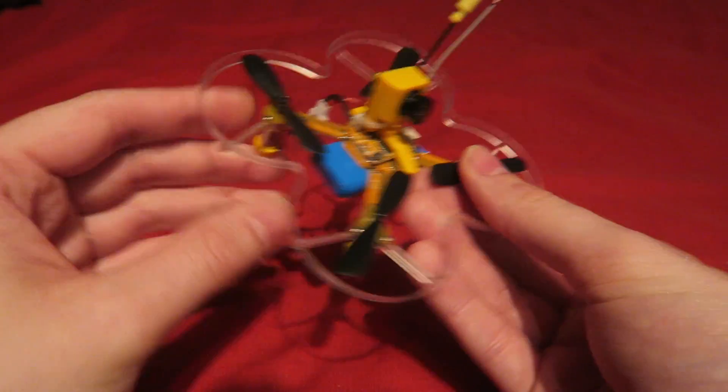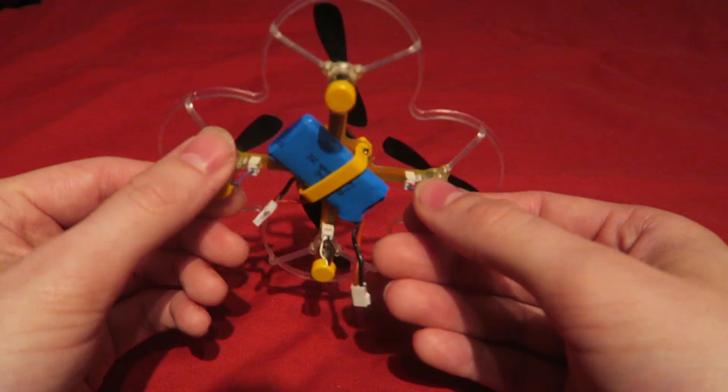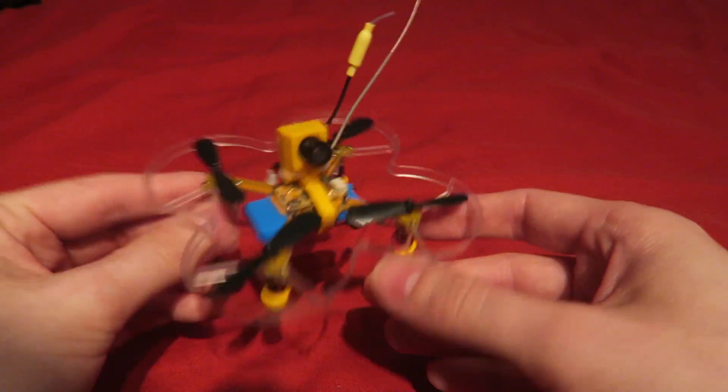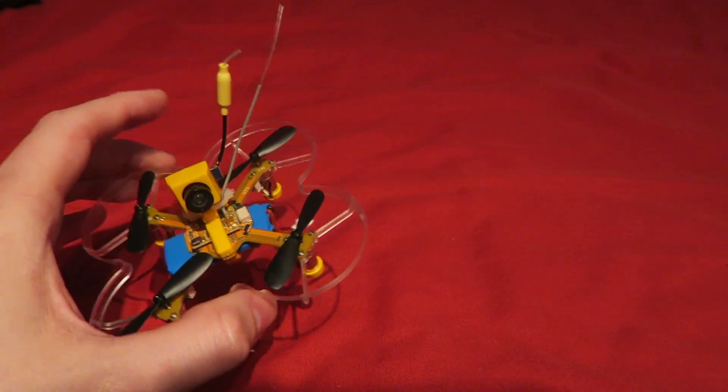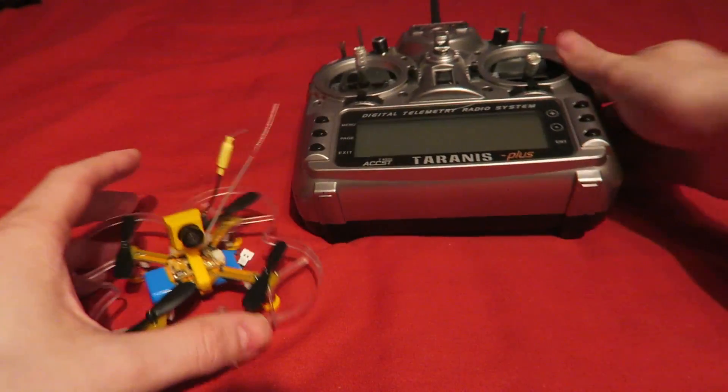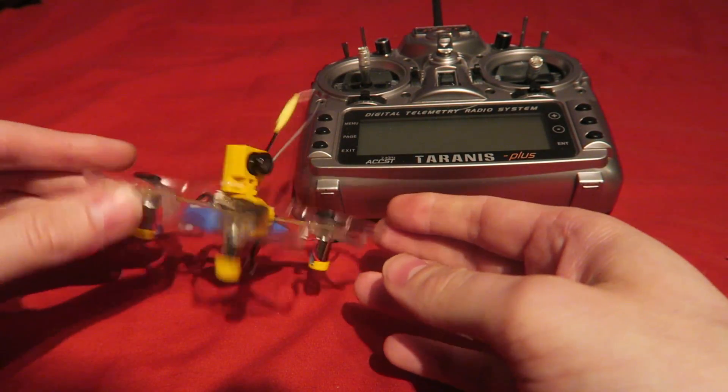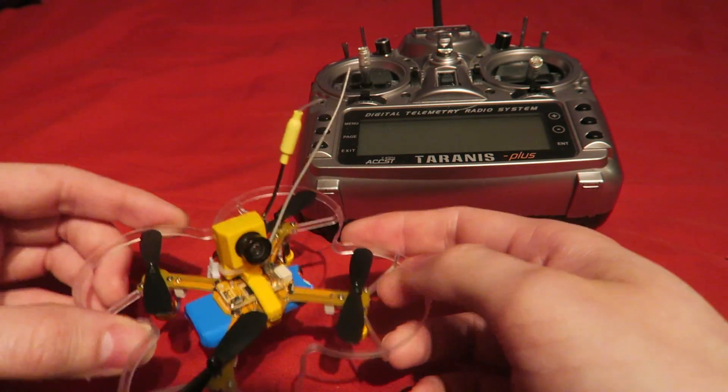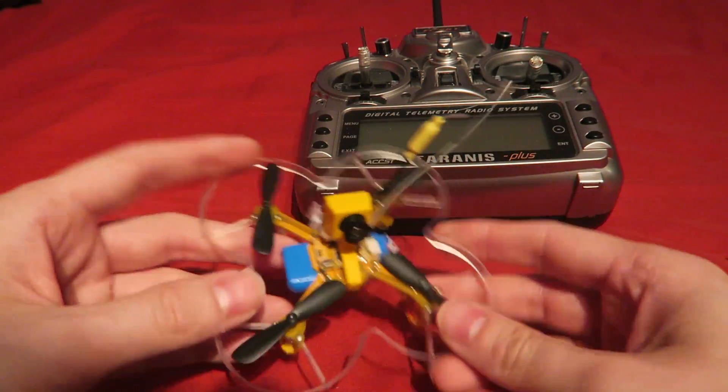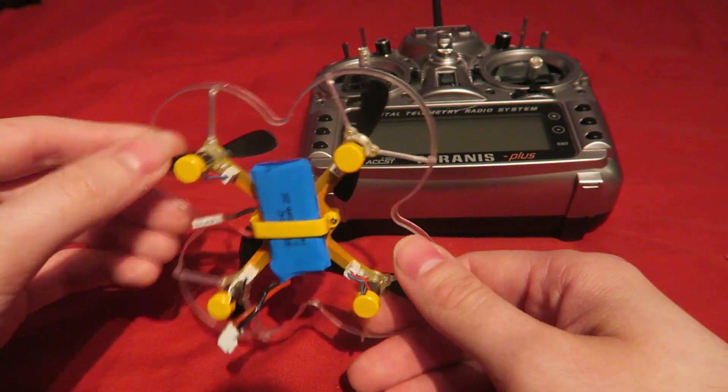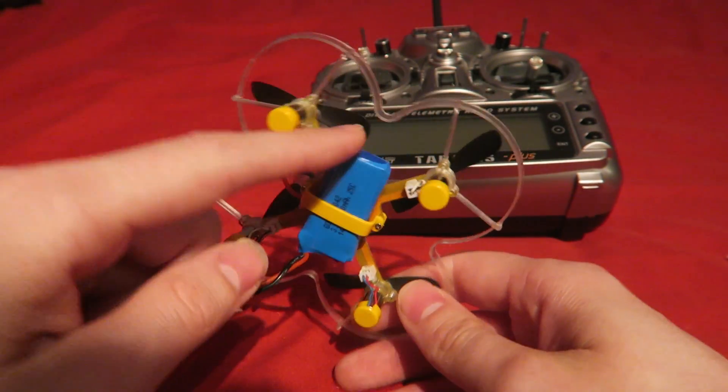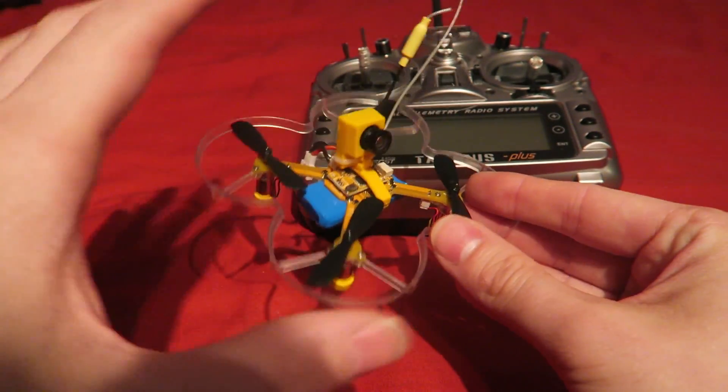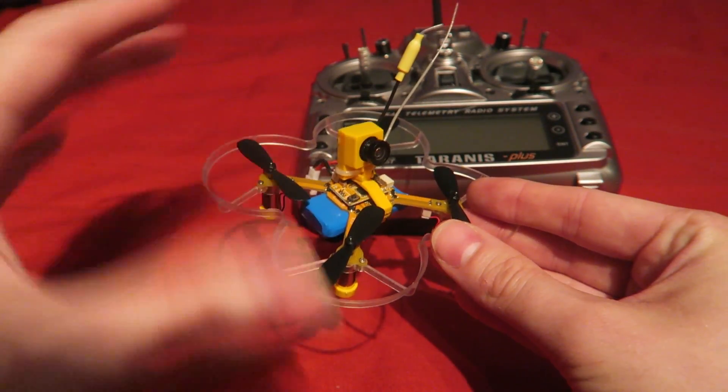So yeah it definitely has some improvements to be made on this one but I have of course bound it to my Taranis in D8 mode and that wasn't a problem at all. But yeah I would have liked to have seen spare parts, I'd like to seen a battery especially for the price. It's around about the same price as the QX90 and 80 and you do get a battery with that.